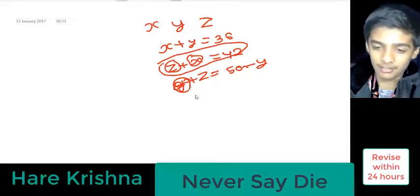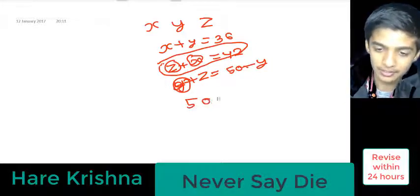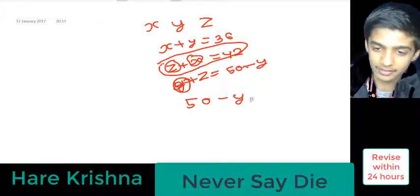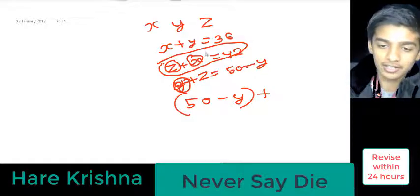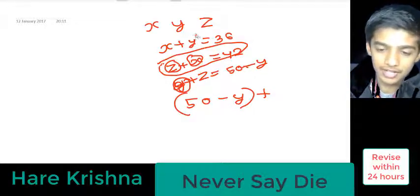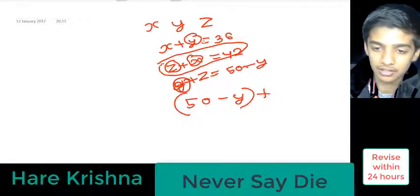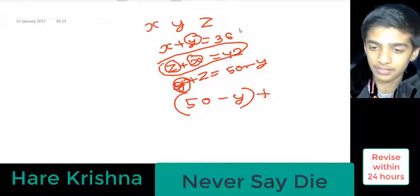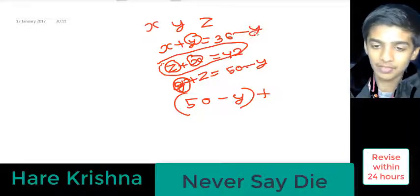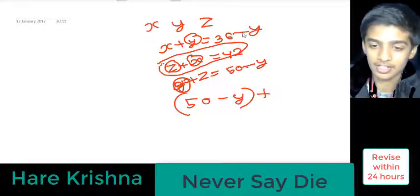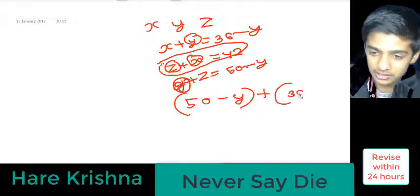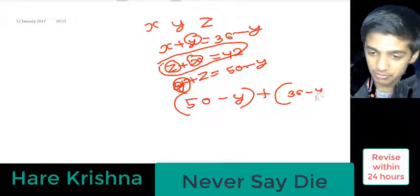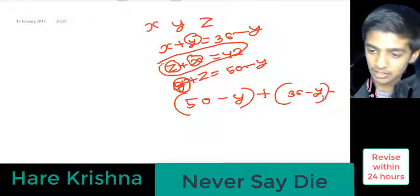So instead of z, we can write 50 minus y, plus instead of x we can write, we will transpose y from here and it will become 36 minus y. So instead of x, we can write 36 minus y is equal to 42.